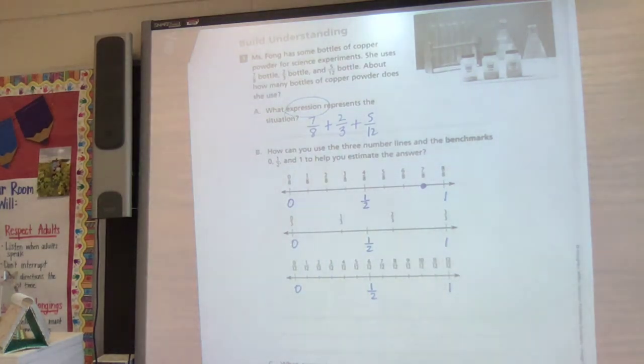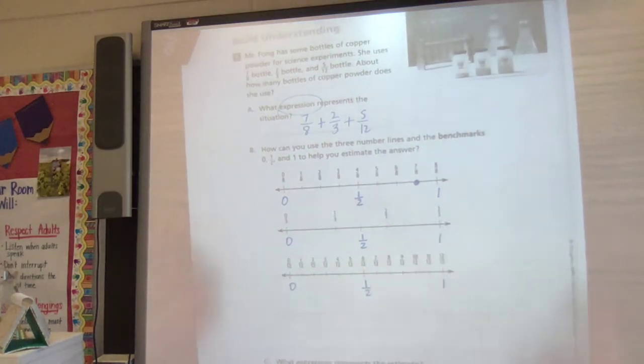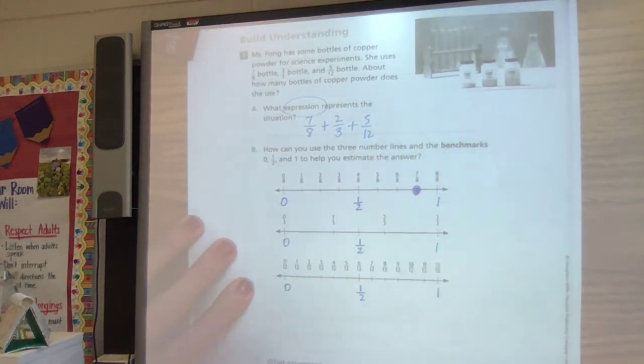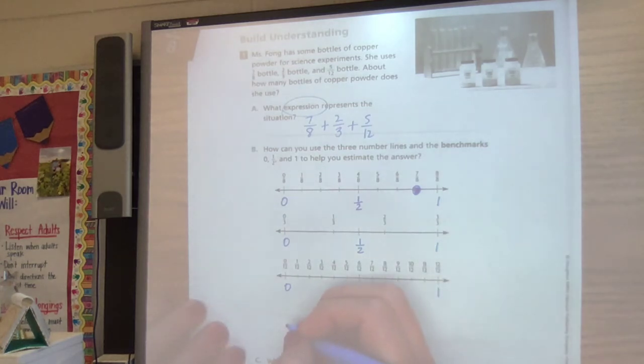So my seven eighths that I put here on the number line, very close to one whole. So I'm going to put that right here. It says, what expression represents the estimate? So I'm rounding seven eighths to a whole.